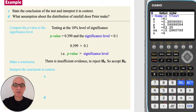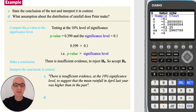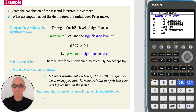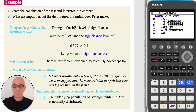Interpreting the conclusion in context, we state that there is insufficient evidence at the 10% significance level to suggest that the mean rainfall in April last year was higher than in the past. The assumption that Peter made refers to the underlying population distribution — i.e., it is assumed that the population of average rainfall in April is normally distributed.